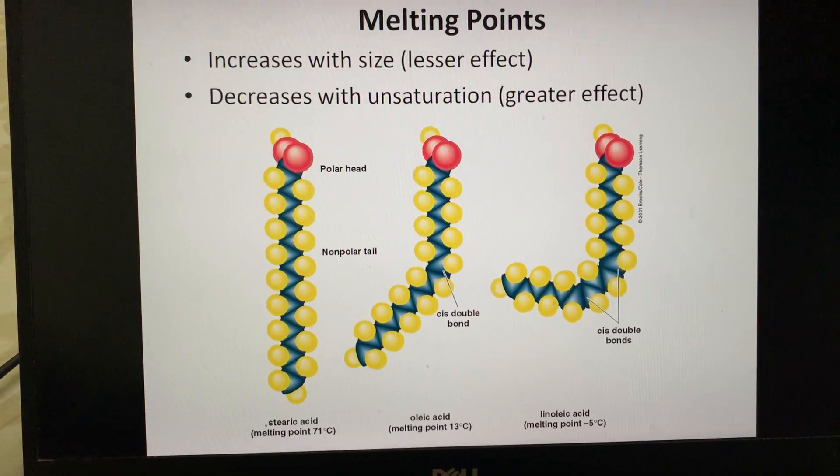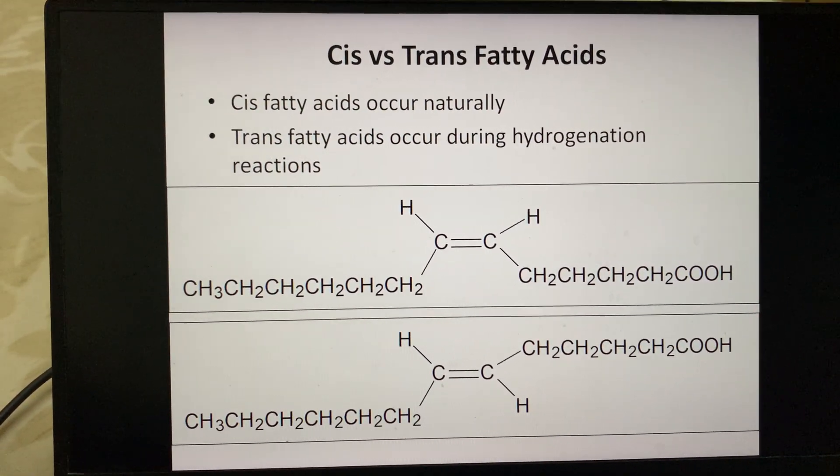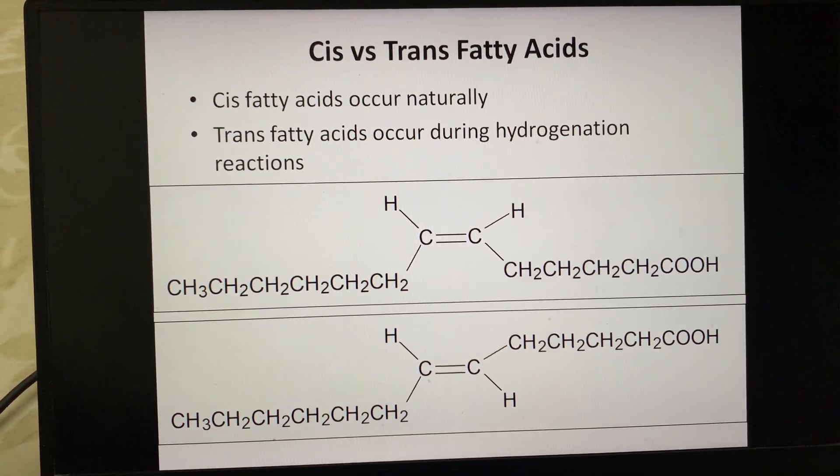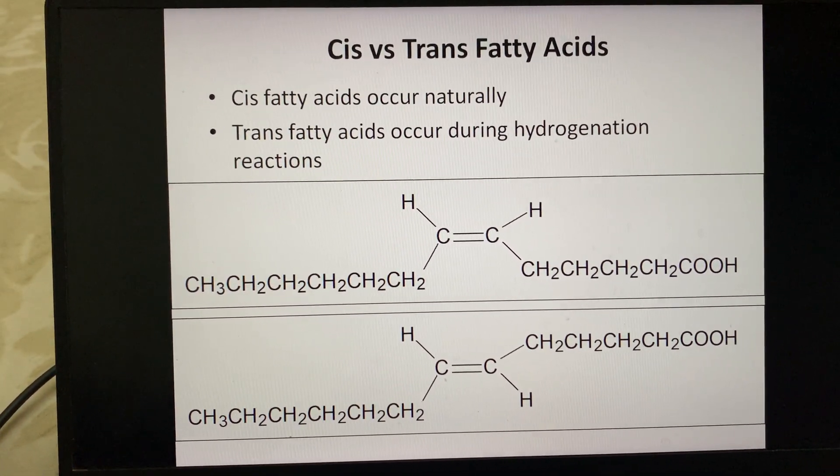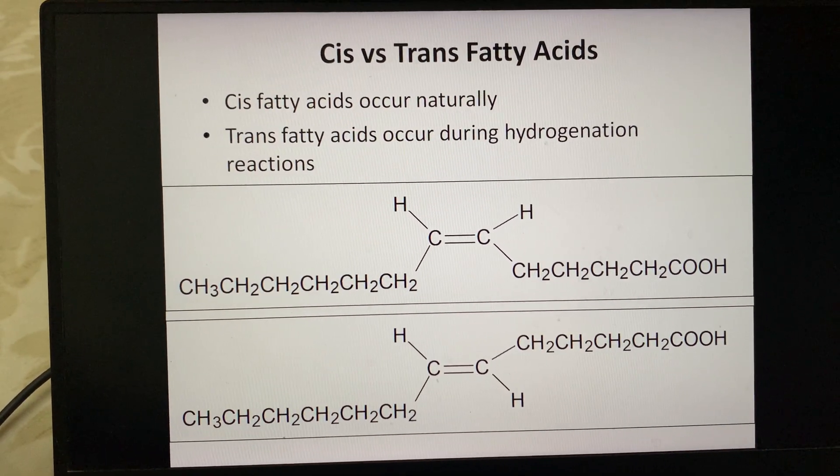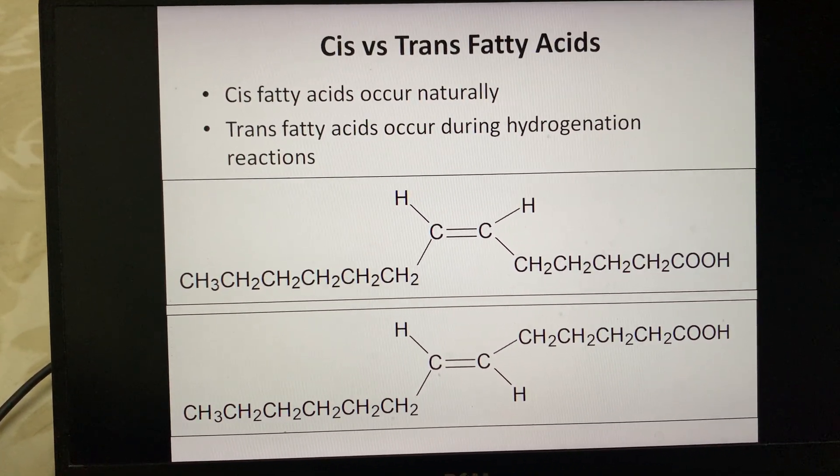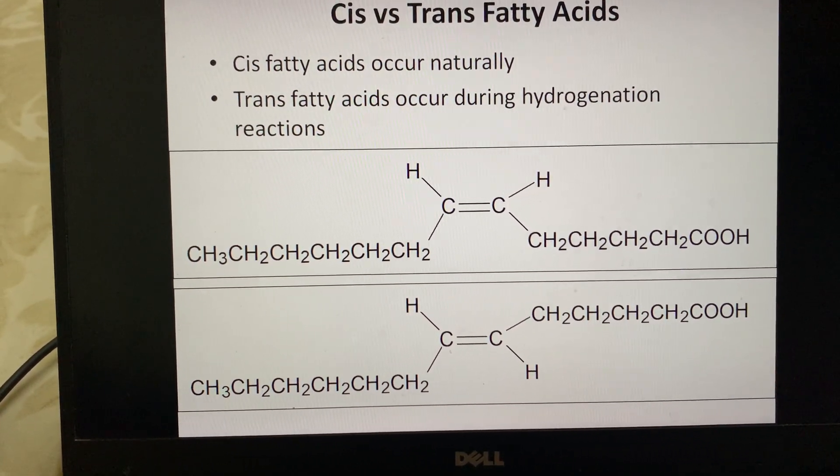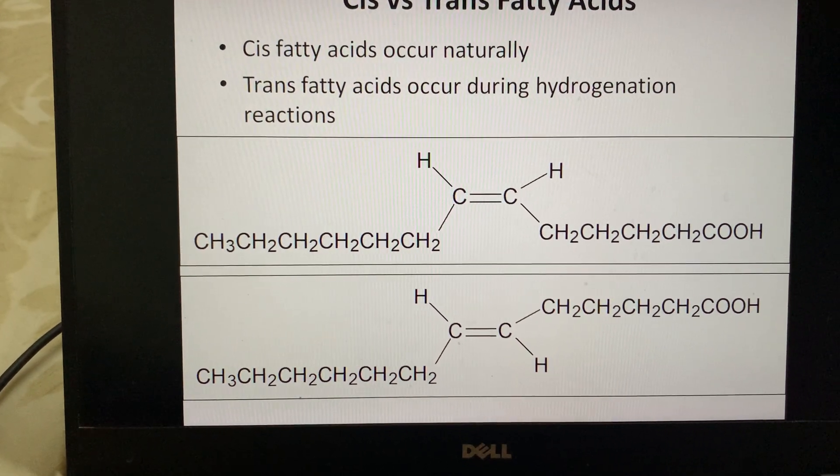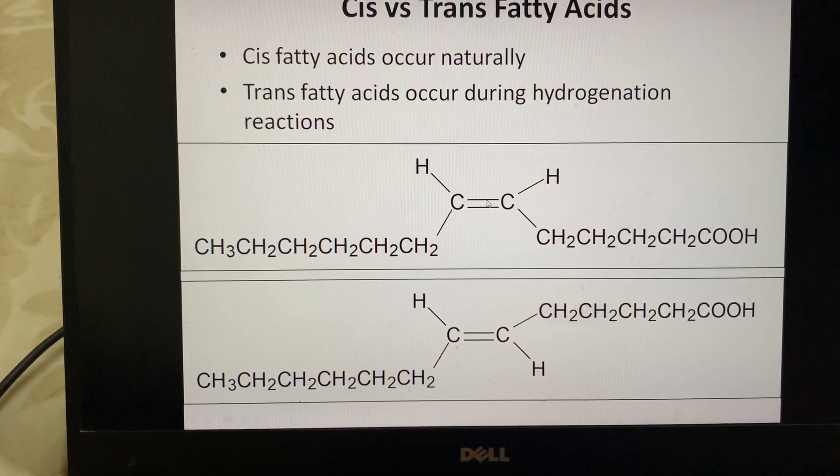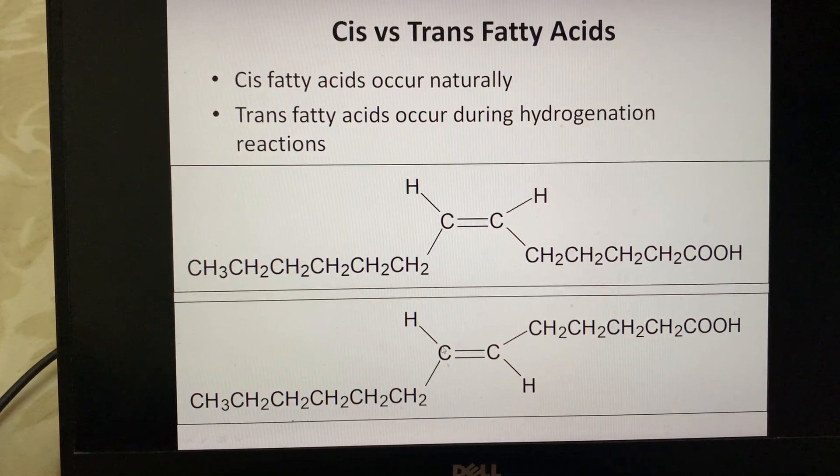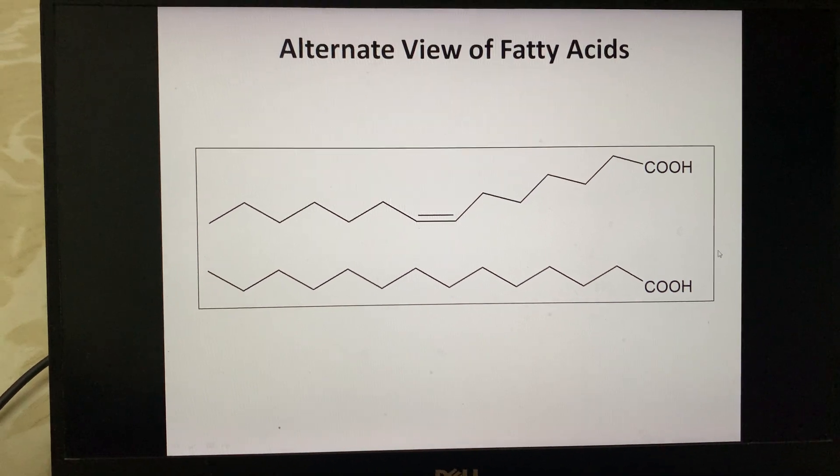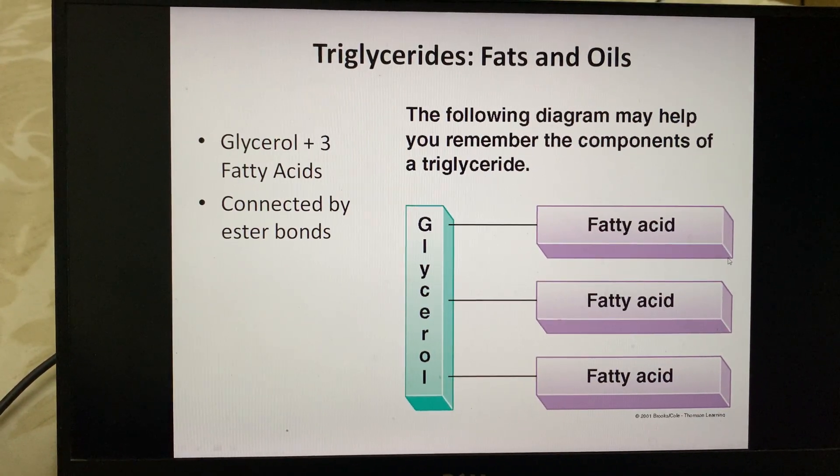Cis versus trans fatty acids: when there is a double bond in the straight chain, there can be cis and trans fatty acid formations. Cis fatty acids occur naturally. Trans fatty acids occur during hydrogenation reactions. There are two types: the upper structure is cis and the lower is the trans structure. This is an alternate view of the fatty acids and triglycerides.